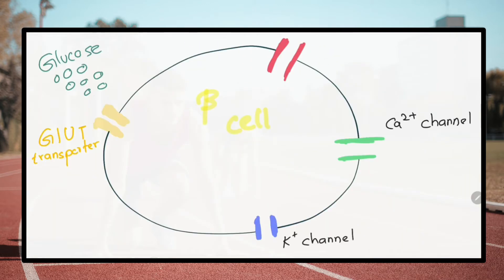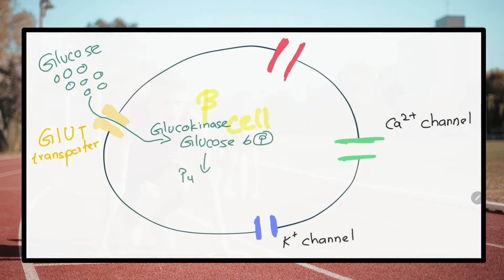What is the importance of having glucokinase in pancreatic beta cells? Glucokinase requires a high concentration of glucose to become half saturated, and it has no feedback regulation from glucose-6-phosphate, so it can act more efficiently than hexokinase.